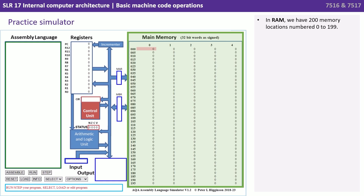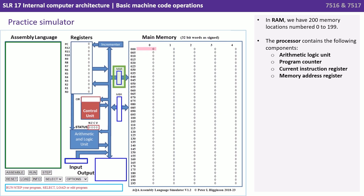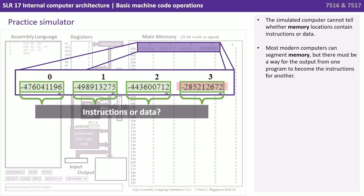Let's break this simulator down so you understand what the main components do. In RAM we have 200 memory locations numbered 0 to 199. The processor contains the following components: an arithmetic logic unit, a program counter, a current instruction register, a memory address register, and a memory buffer register. The simulated computer cannot tell whether memory locations contain instructions or data. Most modern computers can segment memory, but there must be a way for the output from one program to become the instructions for another.